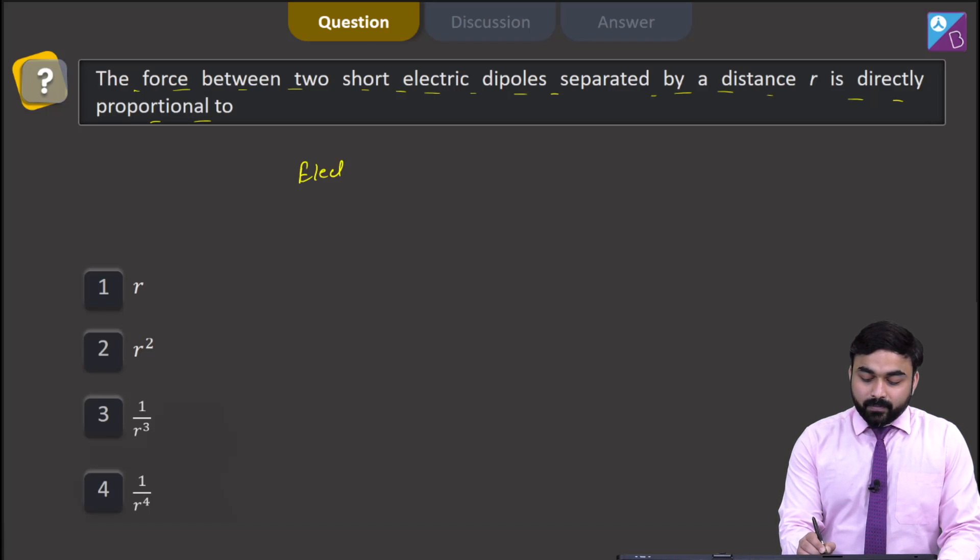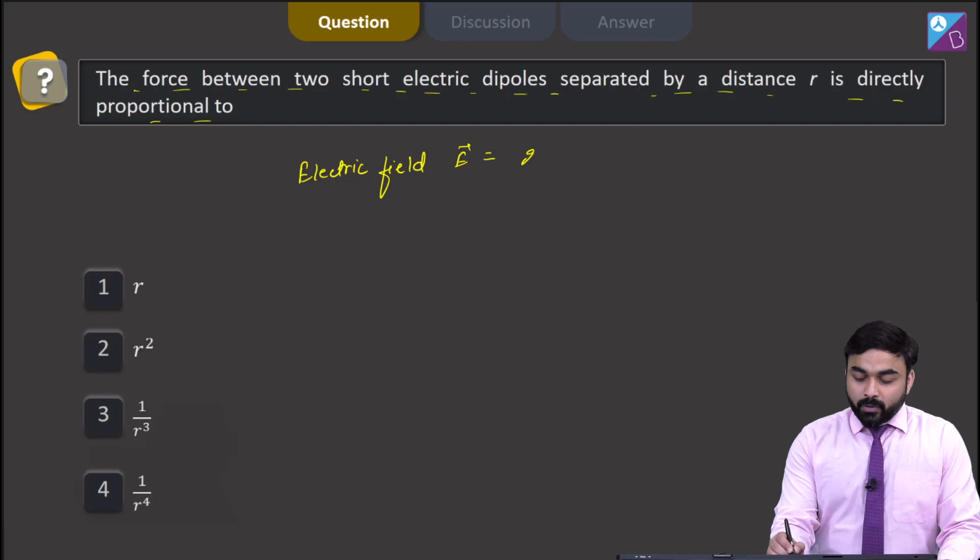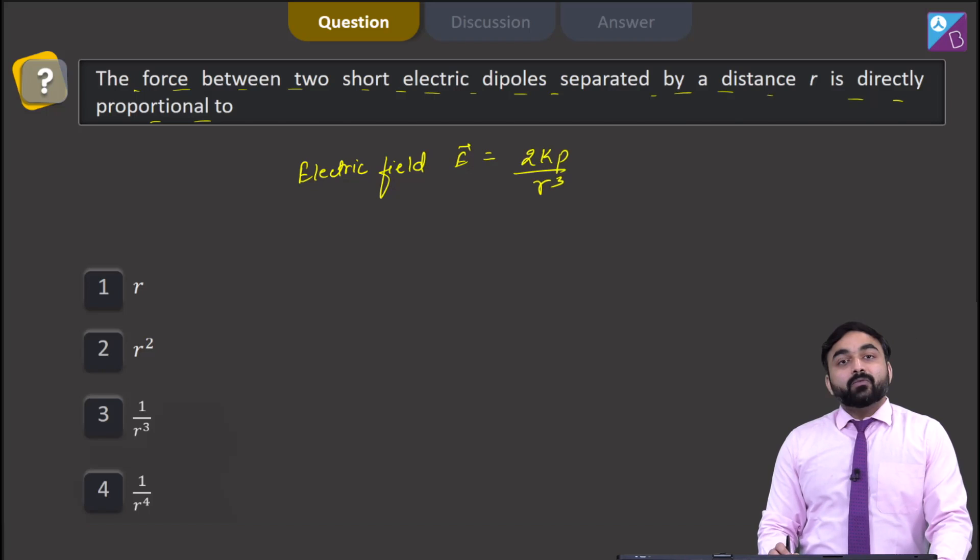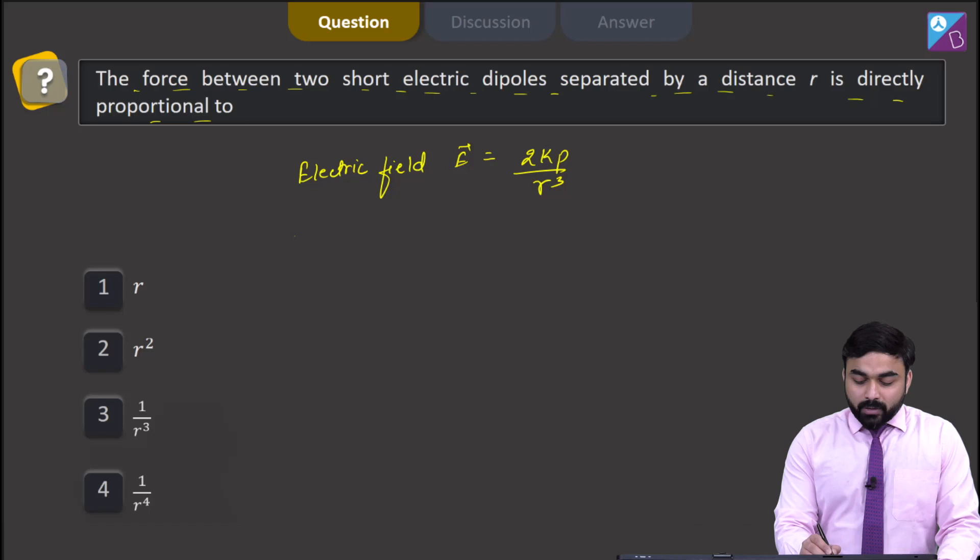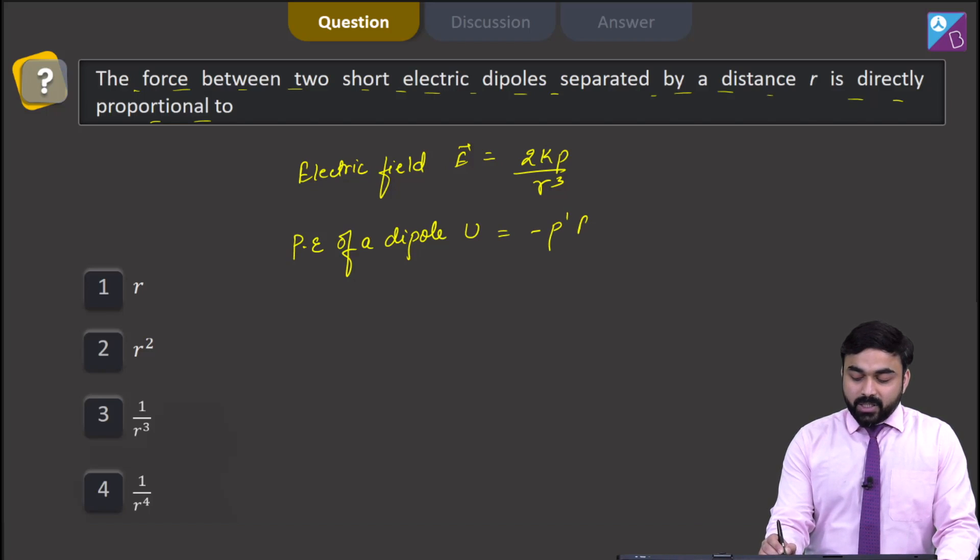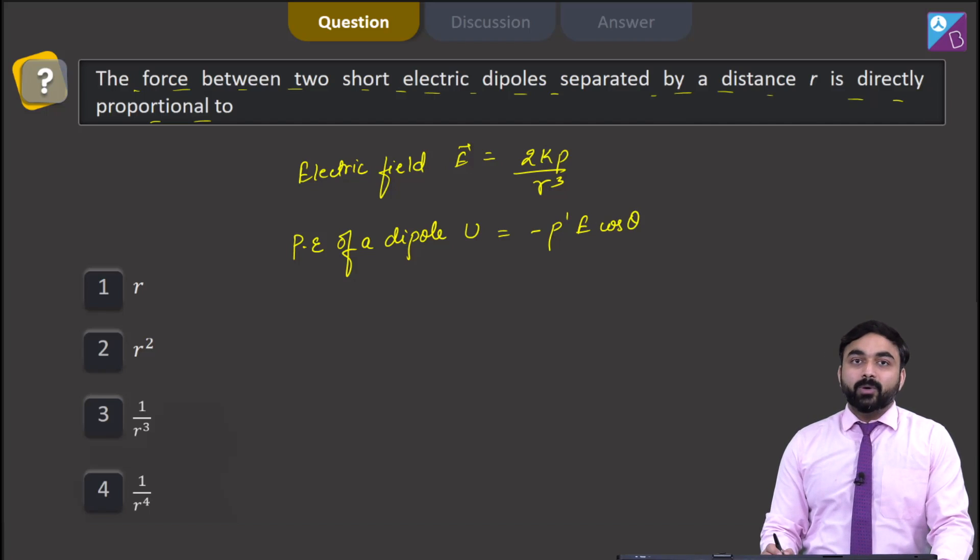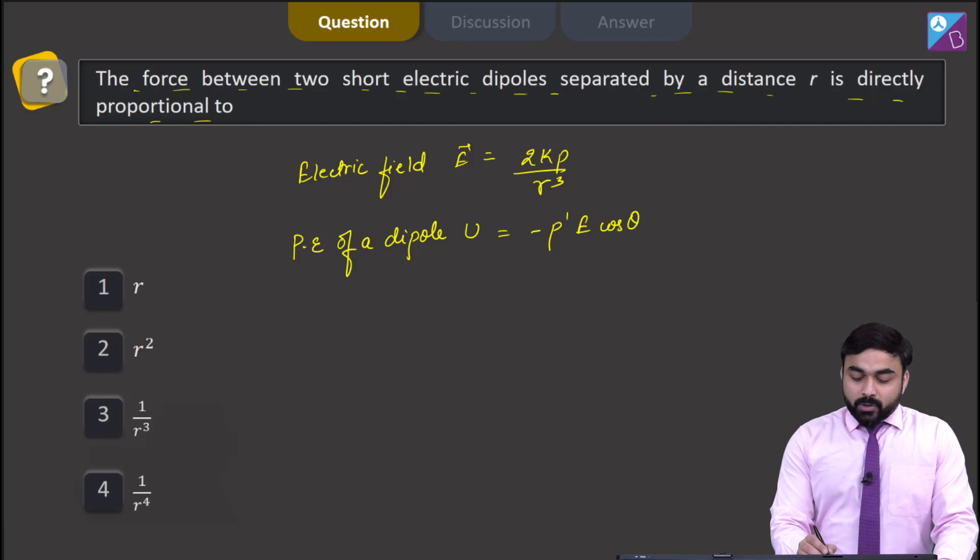electric field due to short electric dipole is given by 2kp over r cube, where p is the dipole moment for one of the dipoles. Also, if we calculate potential energy of a dipole, it is given by minus p dash e cos theta, where p dash is the dipole moment for another dipole.